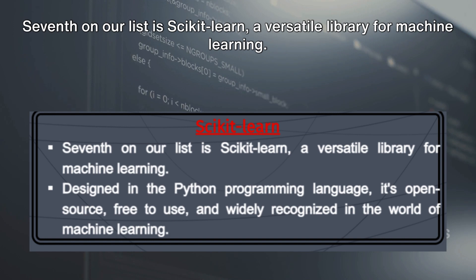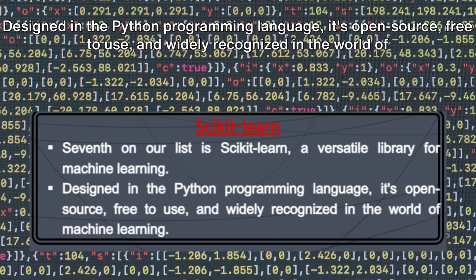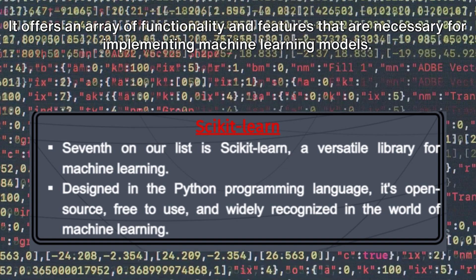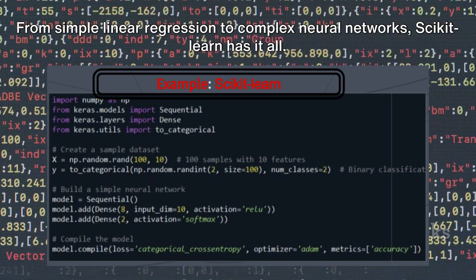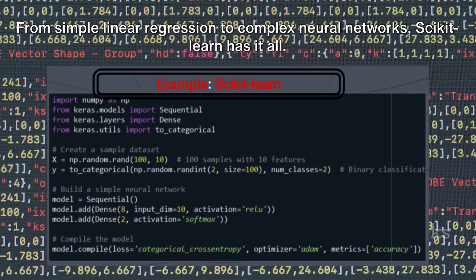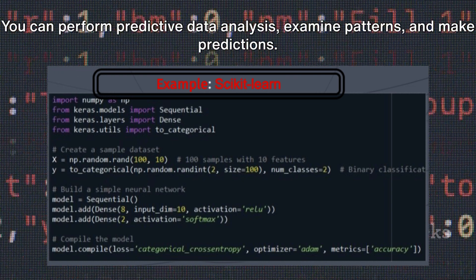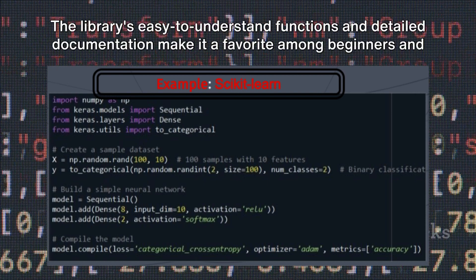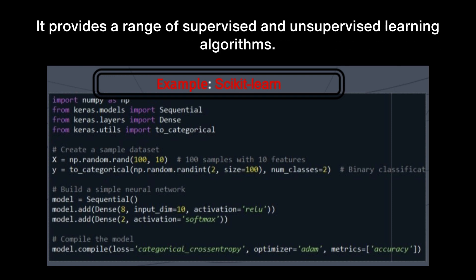Seventh on our list is Scikit-Learn, a versatile library for machine learning. Designed in Python, it's open-source, free-to-use, and widely recognized in the world of machine learning. It offers an array of functionality necessary for implementing machine learning models — from simple linear regression to complex neural networks. You can perform predictive data analysis, examine patterns, and make predictions. The library's easy-to-understand functions and detailed documentation make it a favorite among beginners and professionals alike, providing a range of supervised and unsupervised learning algorithms.